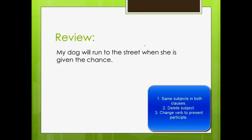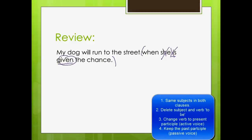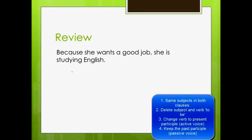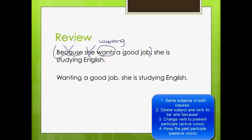And the other thing to remember is: if in my adverb clause I have the passive voice — like 'is given' — then after I delete my subject and my verb 'to be,' I keep my past participle. So my sentence would become: 'My dog will run to the street when given the chance.' And the last thing we talked about was the subordinate conjunction 'because,' which is special — once I delete my subject, I also have to delete my subordinate conjunction. Then I need to change my verb into the present participle. So my sentence becomes: 'Wanting a good job, she is studying English.'